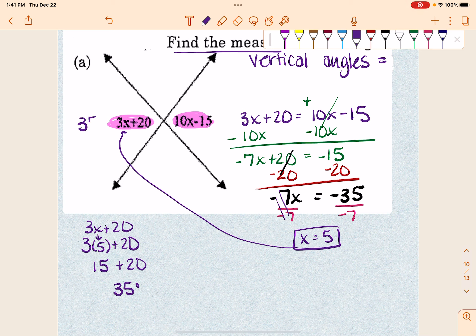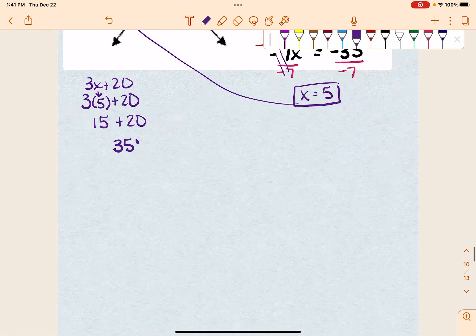So if this is 35 degrees, that means that this one also has to be 35 degrees, because they're equal because they happen to be vertical angles. Okay, so we've got a little bit of a piece there that we're trying to kind of deal with. Let's try one more.